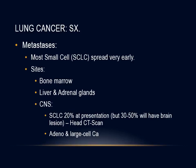Lung cancer can spread to any part of the body. Metastatic spread may result in the presenting symptoms or occur later in the course of disease. Spread can include bone marrow, liver, or adrenal glands. Small cell carcinoma spreads very early — the CNS is involved in 20% at presentation and up to 50% will have brain lesions by CT or autopsy. Adenocarcinoma also spreads to the CNS more readily than squamous cell or large cell carcinoma in general.